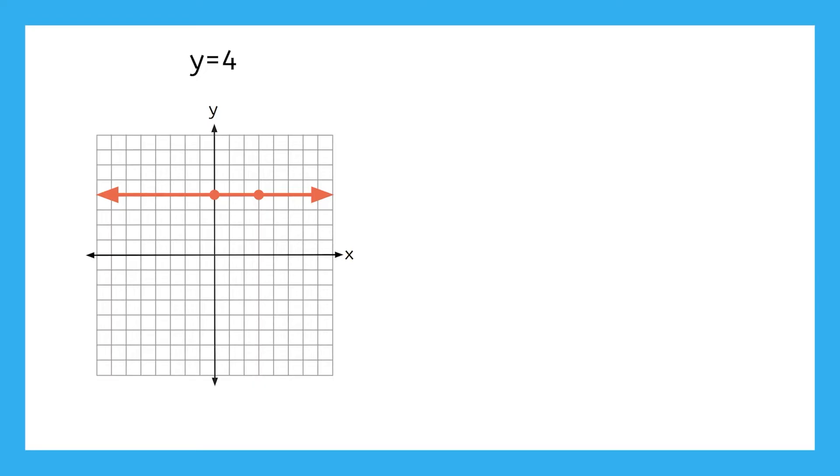So what if I have a different horizontal line like this one? Pause the video here and find the equation of this line. This line has a slope of 0 since there's never any rise, and the y-intercept is at negative 2. So that makes the equation of this line y equals 0x minus 2, or since 0x just cancels out, just y equals negative 2.